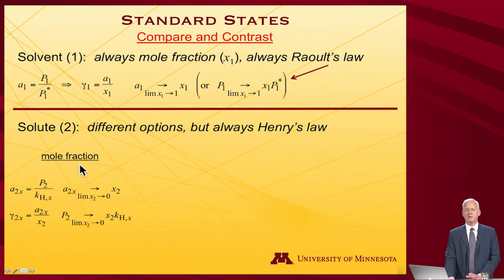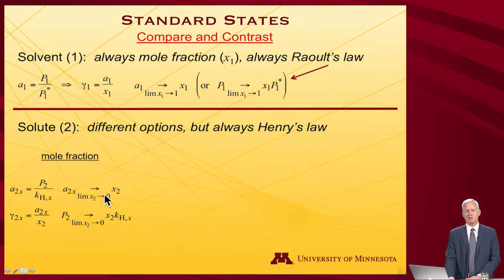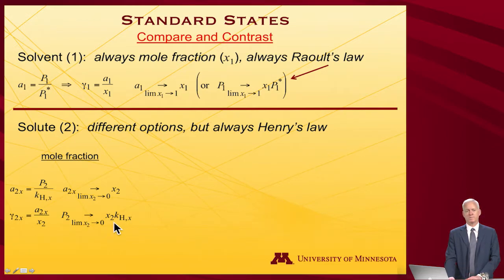We also saw Henry's law in the mole fraction standard state. The activity is the observed pressure divided by the Henry's constant, which is the slope of the line of the vapor pressure as the mole fraction drops towards 0. So activity goes towards mole fraction in the limit as mole fraction goes to 0, and the activity coefficient is still activity divided by mole fraction. This means P₂ in the limit as you decrease solute to 0 mole fraction goes as mole fraction times Henry's constant — that's why it's the slope, reflecting what the pressure looks like as x₂ goes closer to 0.